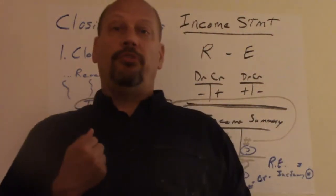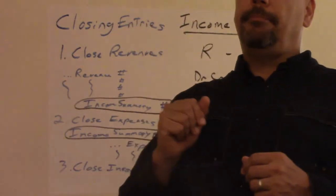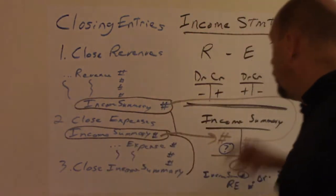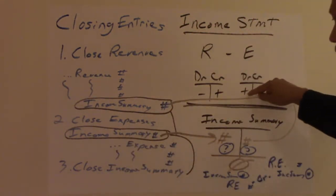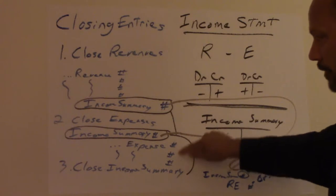Second thing you do is you close the expense accounts. And remember the income statement only has two categories of accounts: revenue and expense. So we're closing the expense. We remember from expense to increase it, the normal balance would be to debit it. So therefore we need to credit all the expense accounts. That's why they're shown right there.